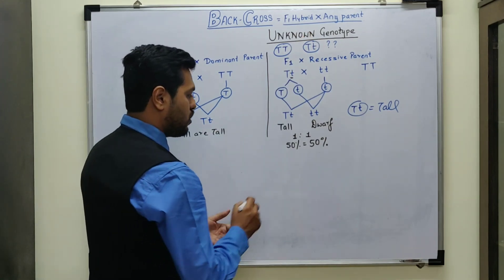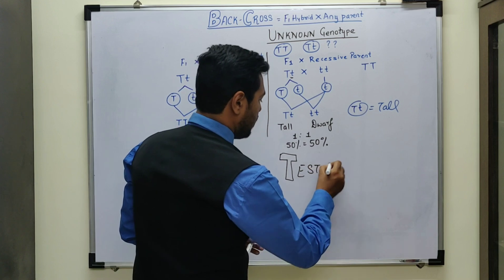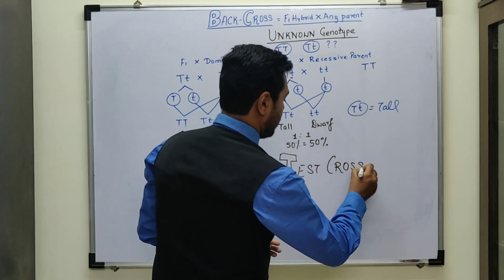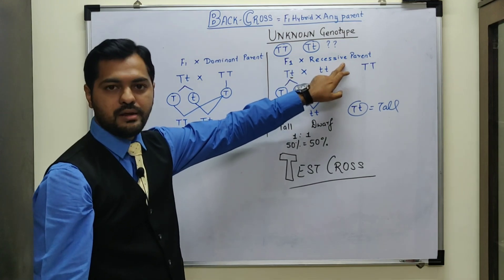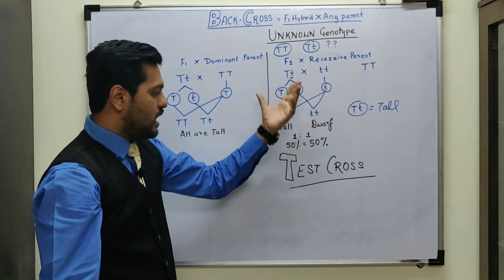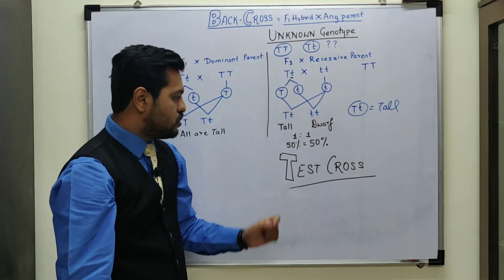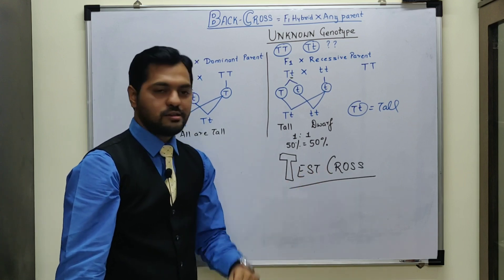So this back cross, we call it as a test cross. So remember students, that the test cross is actually crossing of F1 hybrid with the recessive parent. In fact, any generation of offspring, we can cross with the recessive parent and we can conclude the result. If the ratio is 50% to 50%, one is to one, that means it is a test cross.